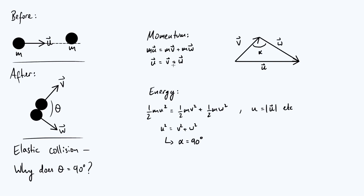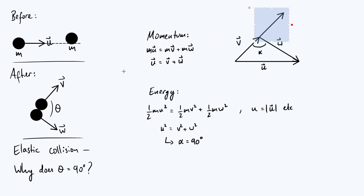How is alpha related to theta? All you have to do is take the v vector, make another copy of it, and move it along the line, because vectors can be moved freely — it is still v even though we've moved it. Then you can see that the angle between v and w is theta, and it's clear that theta and alpha lie on a straight line and add up to 180 degrees. So if alpha is 90 degrees, then theta is also 90 degrees. The particles bouncing off each other at right angles is simply a consequence of conservation of momentum and conservation of energy.